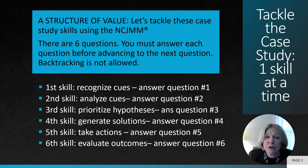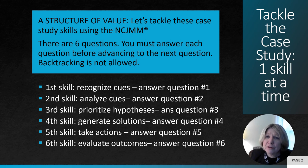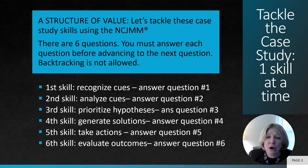In case studies, there are six questions. You must answer each question before advancing to the next question. Backtracking is not allowed. However, in the bow tie, you'll actually be using the first skills to actually get to answer the question. So let's go through what these skills are.